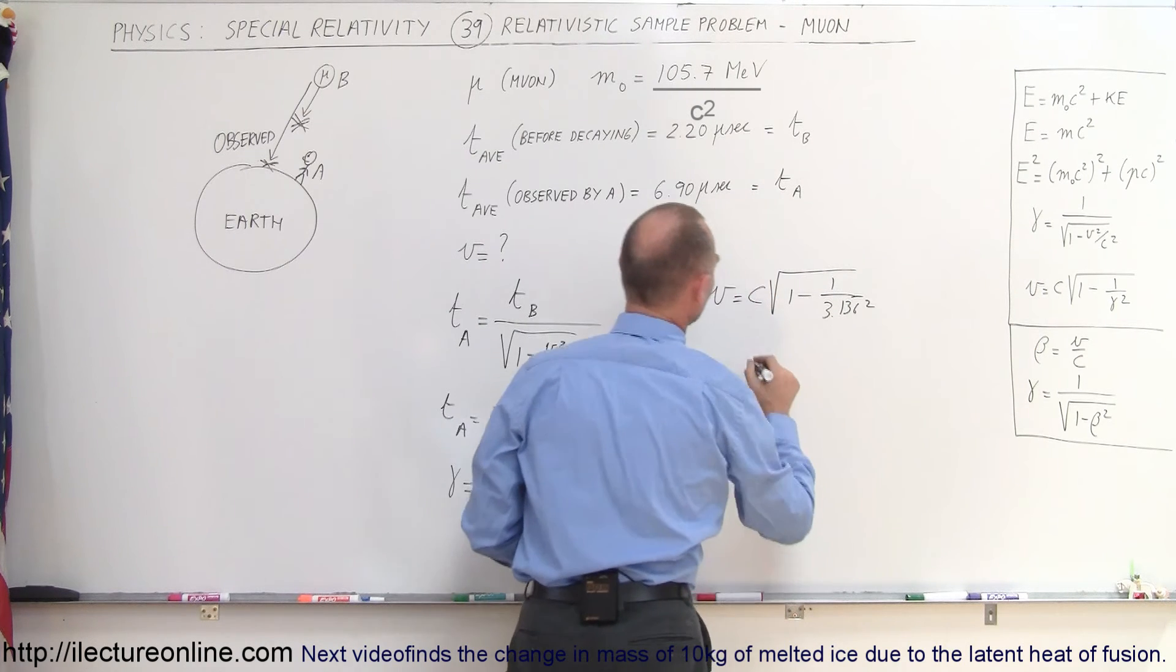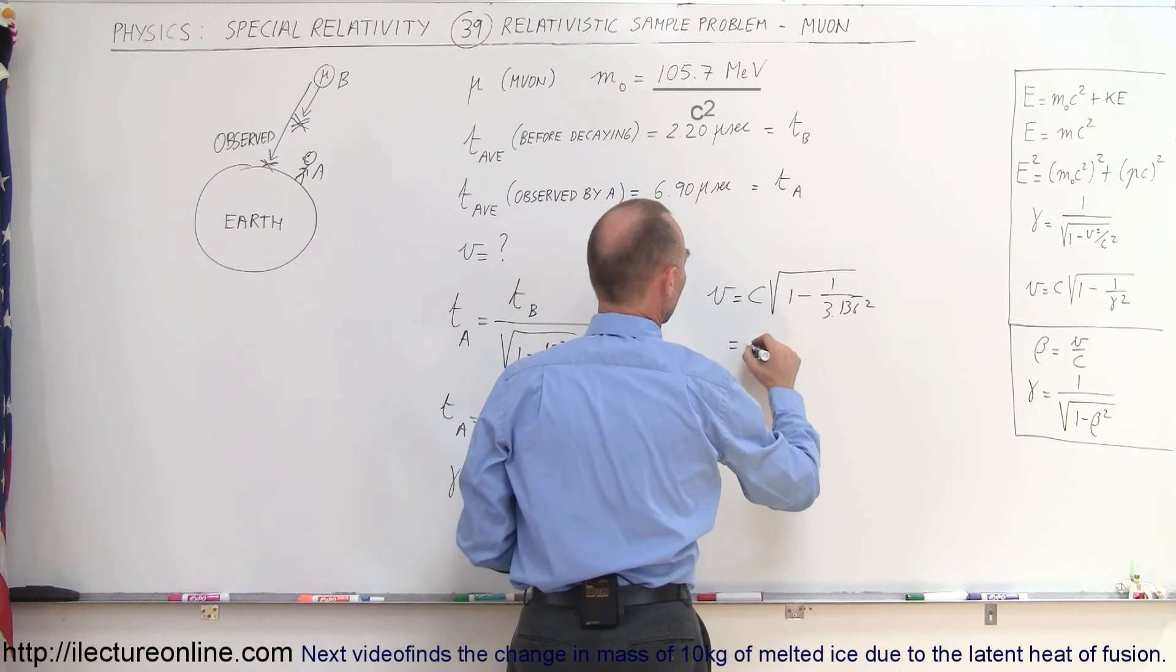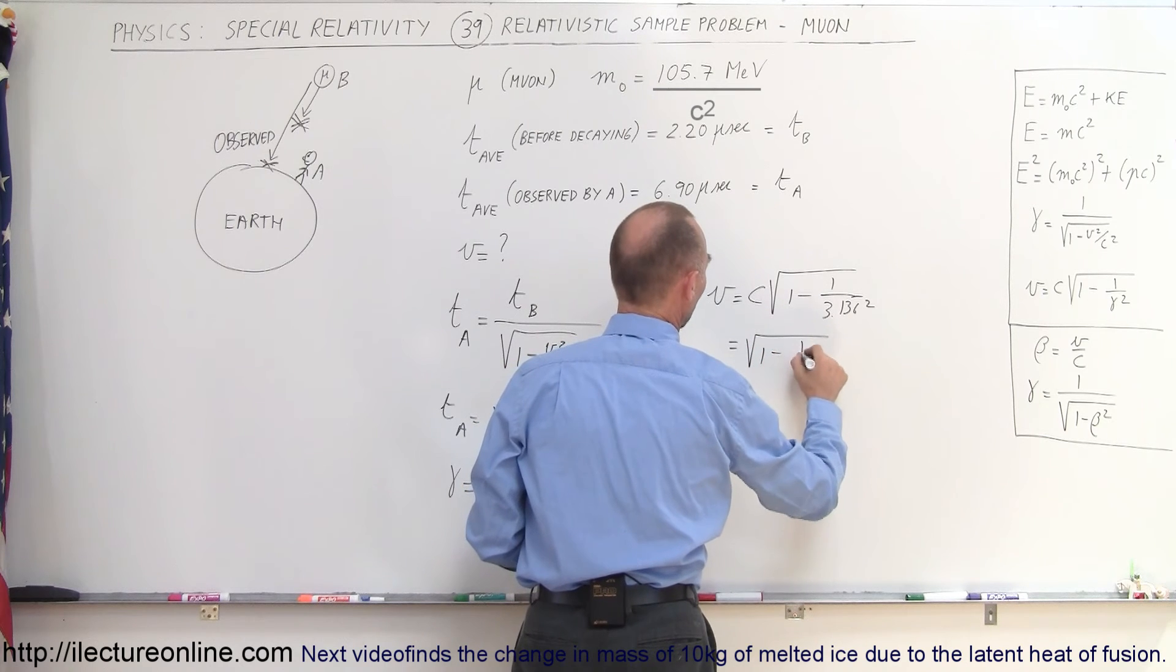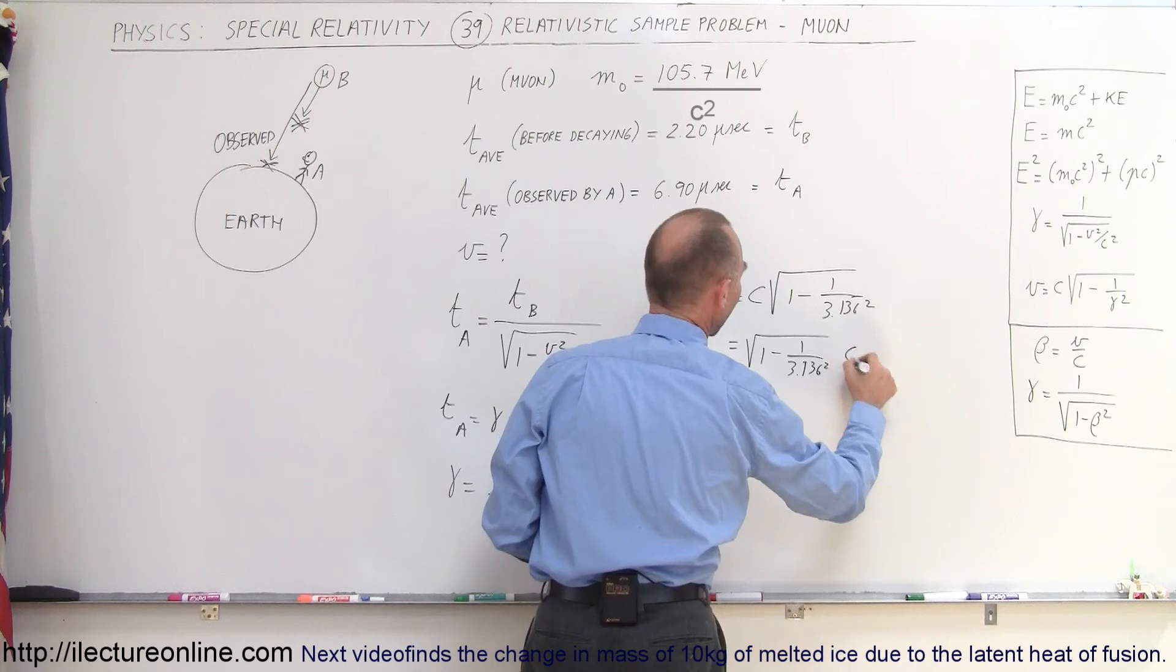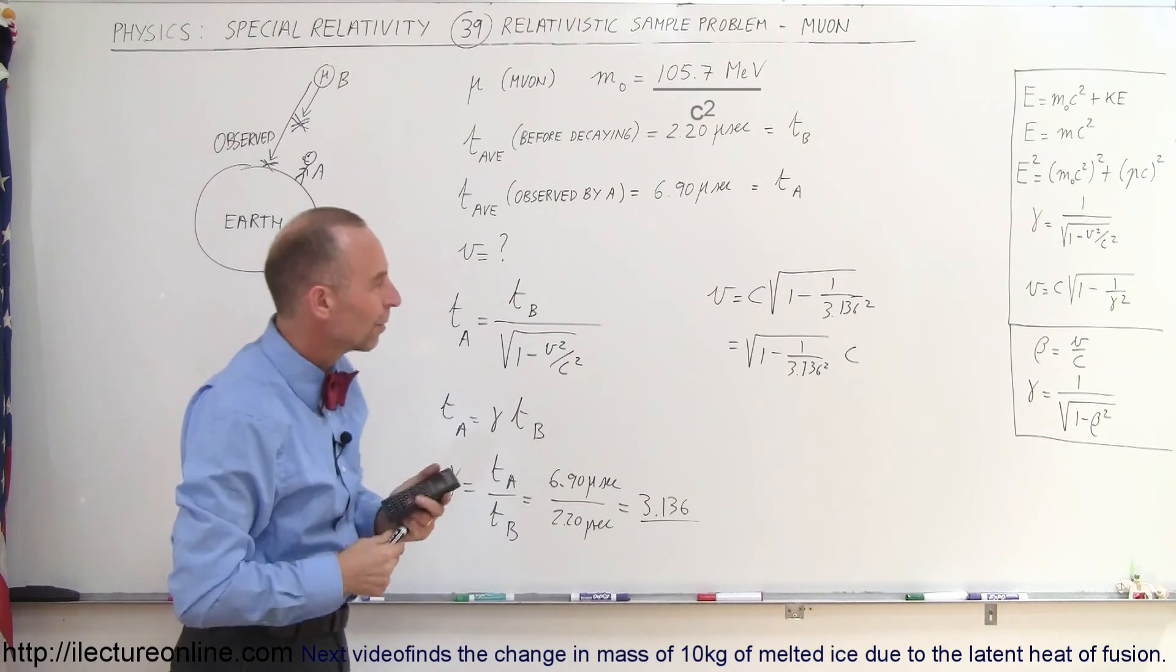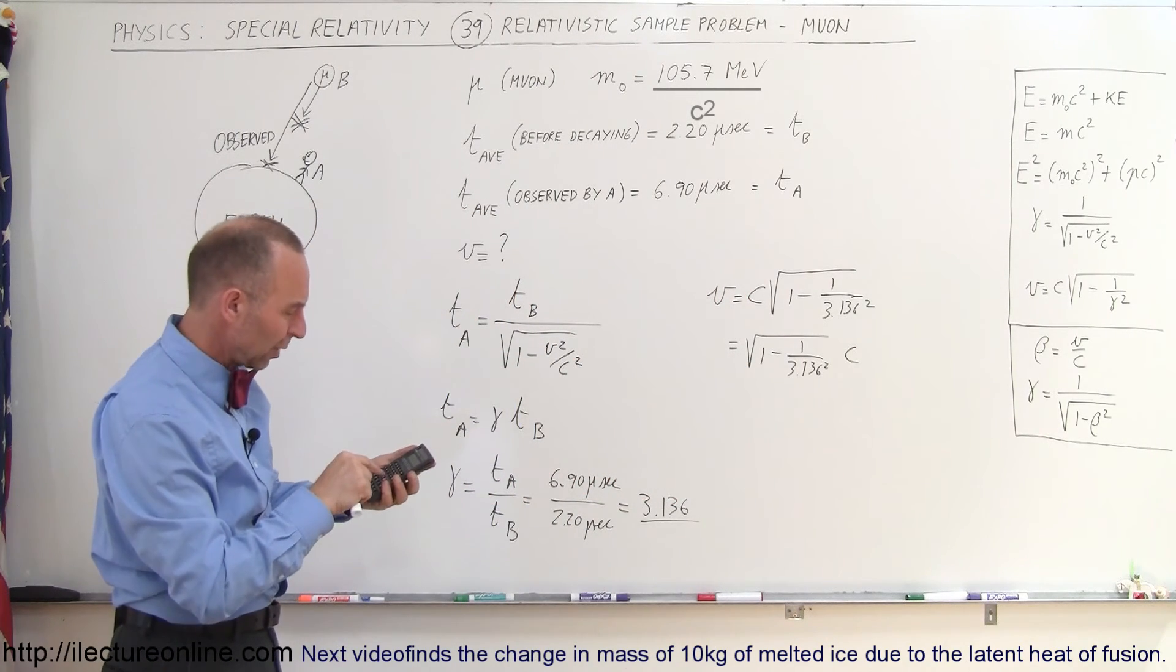So, that's this equation right here. So, this is equal to the square root of 1 minus 1 over 3.136 squared times the speed of light, because that's the way we want to write it.